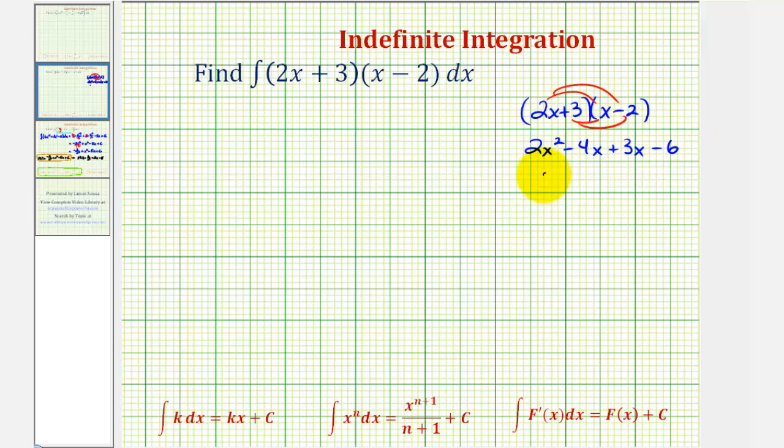Which simplifies nicely to two x squared minus x minus six. So let's write this as the integral of two x to the second minus x to the first minus six, and we'll integrate with respect to x.